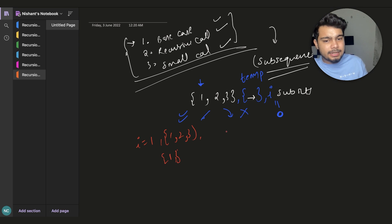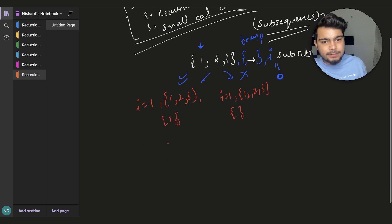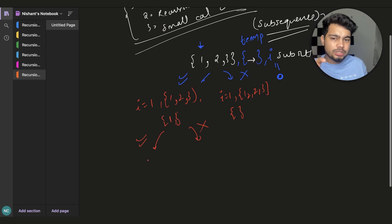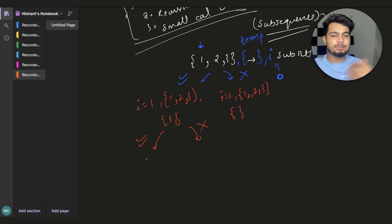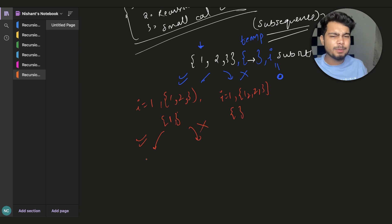We have incremented the index and the subset now includes 1. Next, we do 'not take 1'. This gives us the array and the subset. Then: take, take, not take — inclusion, exclusion, inclusion, exclusion — do not add, do not add. All subsequences and subsets are solved this way — a simple formula.